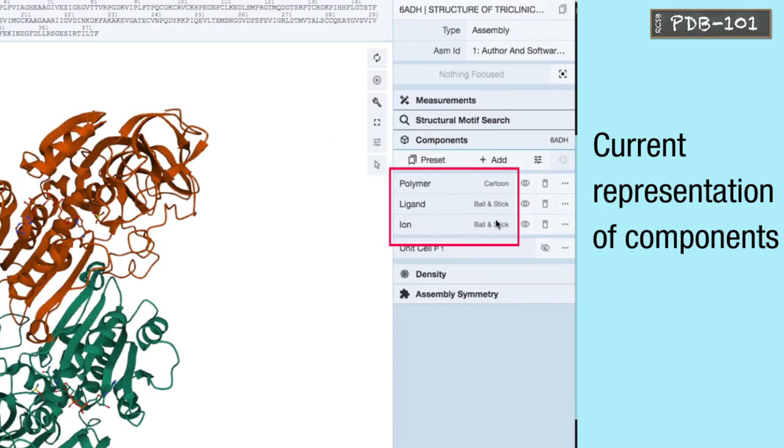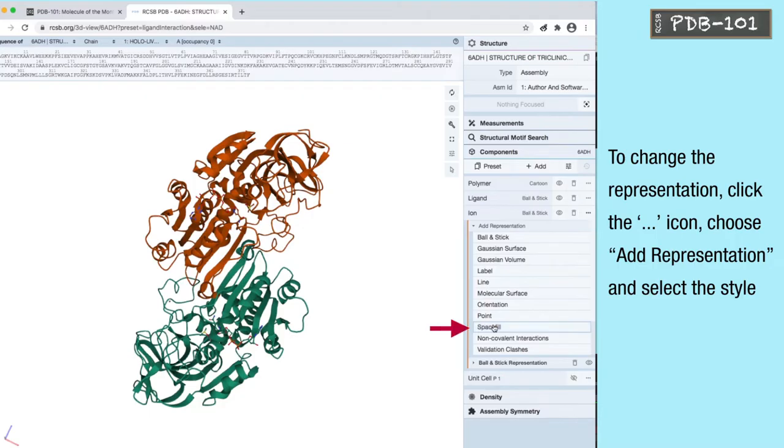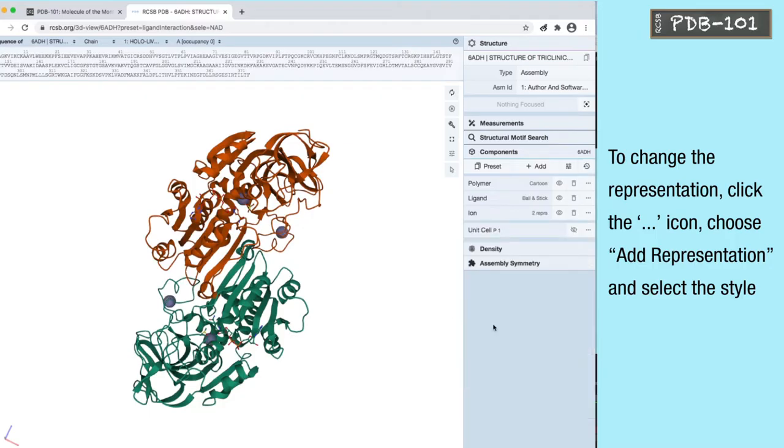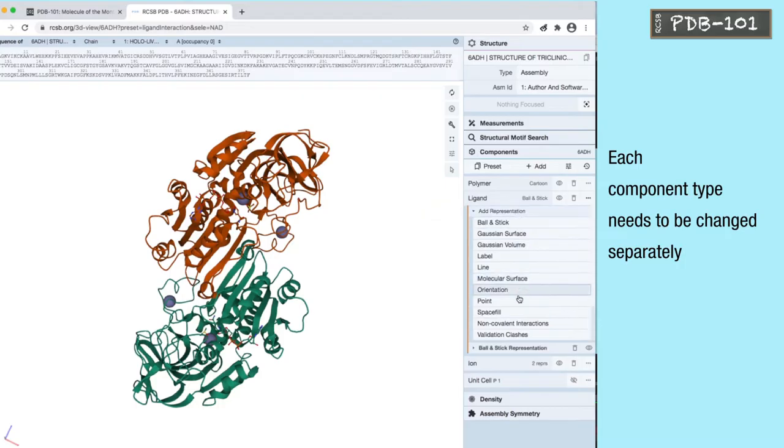The components panel lists the current representation of components. To change the representation, click the 3 dots icon, choose add representation, and select the style. Each component type needs to be changed separately.